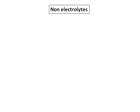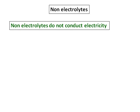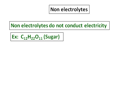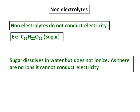Now, non-electrolytes. The definition of non-electrolytes is that they do not conduct electricity. Since they don't conduct electricity, they should not have any ions. An example is C12H22O11, the common sugar. It dissolves in water but does not ionize to produce ions, and hence a solution of sugar will not conduct electricity — it is a non-electrolyte.